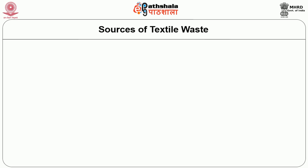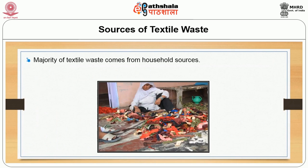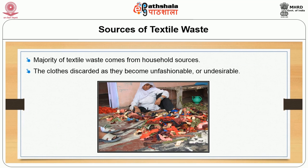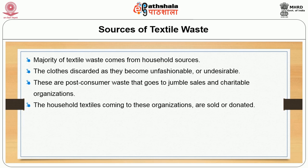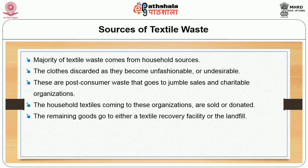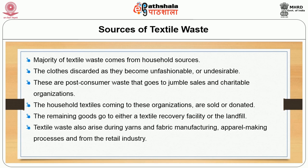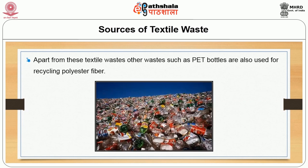Regarding the sources of textile waste, the majority comes from household sources — clothes discarded as they become unfashionable and undesirable. These are post-consumer wastes that go to jumble sales and charitable organizations. Textile waste also arises during yarn and fabric manufacturing, apparel making processes, and from the retail industry — these are post-industrial waste. Apart from these, other waste such as PET (polyethylene terephthalate) bottles are also used for recycling polyester fiber.